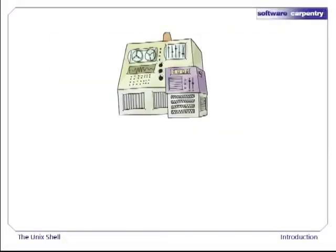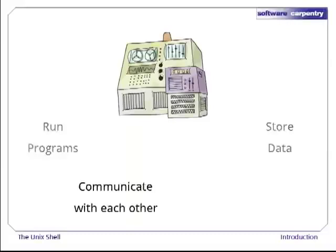At a high level, computers really do four things. They run programs, they store data, they communicate with each other, and they interact with us.